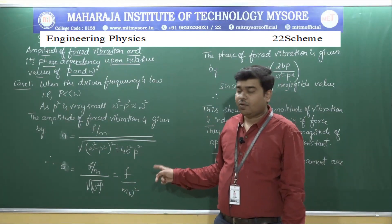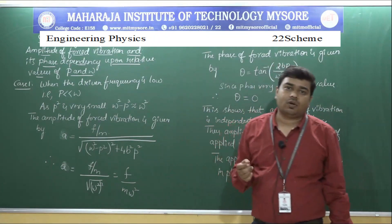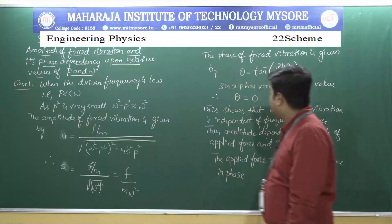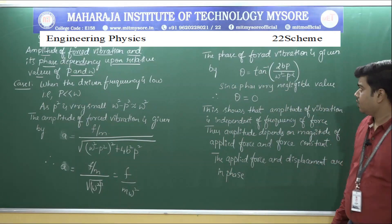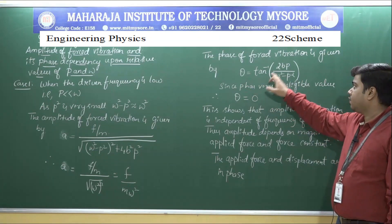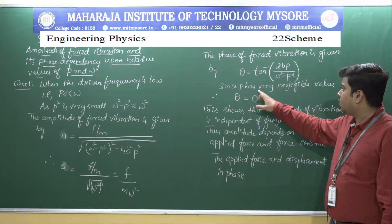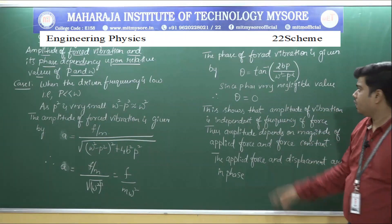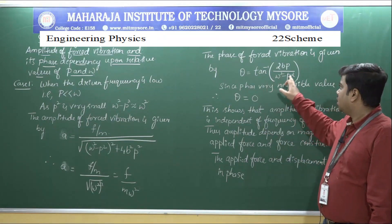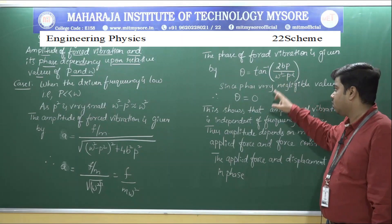So the amplitude of the forced oscillation when the applied frequency is much less than the natural frequency is a = F/(m * omega squared). Now for the phase: theta equals tan inverse of 2bp divided by (omega squared minus p squared). Since p is very negligible, the entire expression 2bp divided by (omega squared minus p squared) becomes approximately zero.